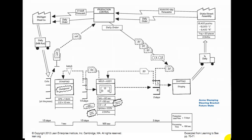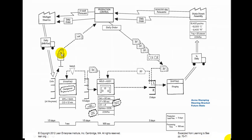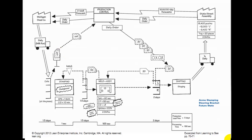We filled in our data boxes where needed. We also cut out all the lines from production control to each process. Here's our Kanban order system — Michigan Steel is now delivering once a day. We again develop our process control line down here, with up lines being the storage areas like supermarkets and the down line being the process cycle time.